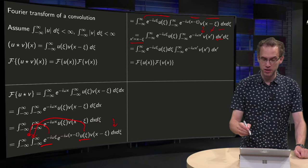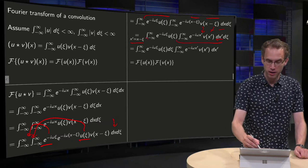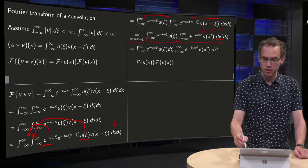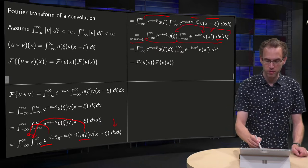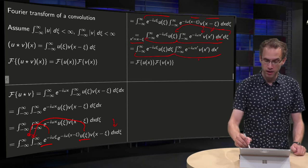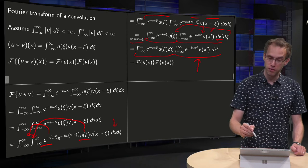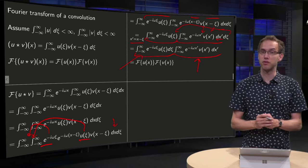And now we recognize this. Here we only have an integral with x prime. Here we only have xi's. So you can take the xi inwards and you get the expression over here. And see what we have got. Here we have the Fourier transform of v, here we have the Fourier transform of u.